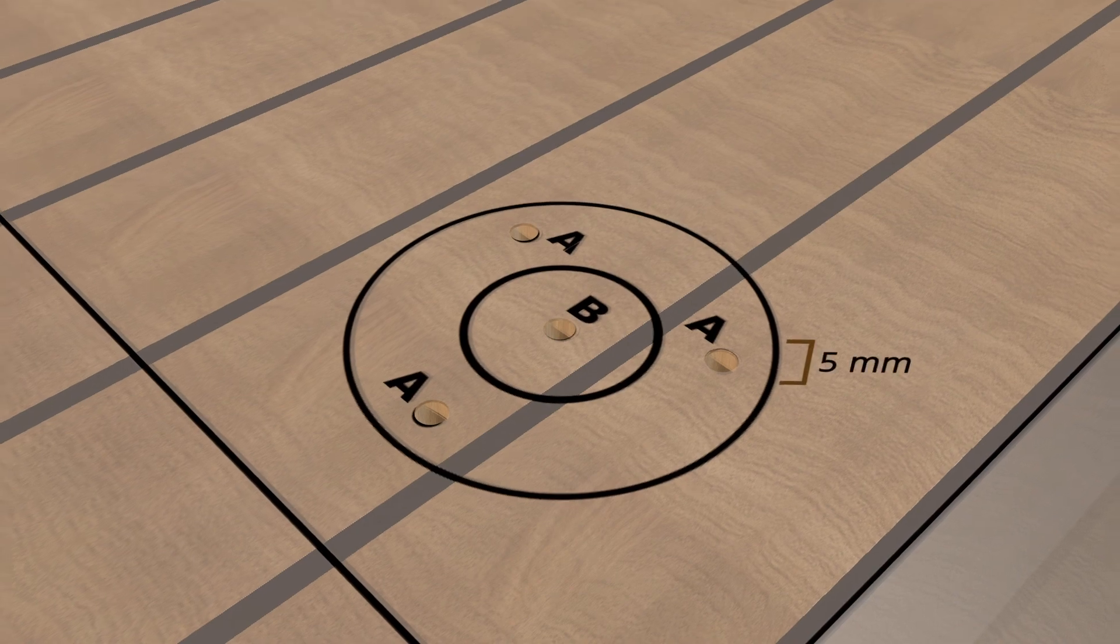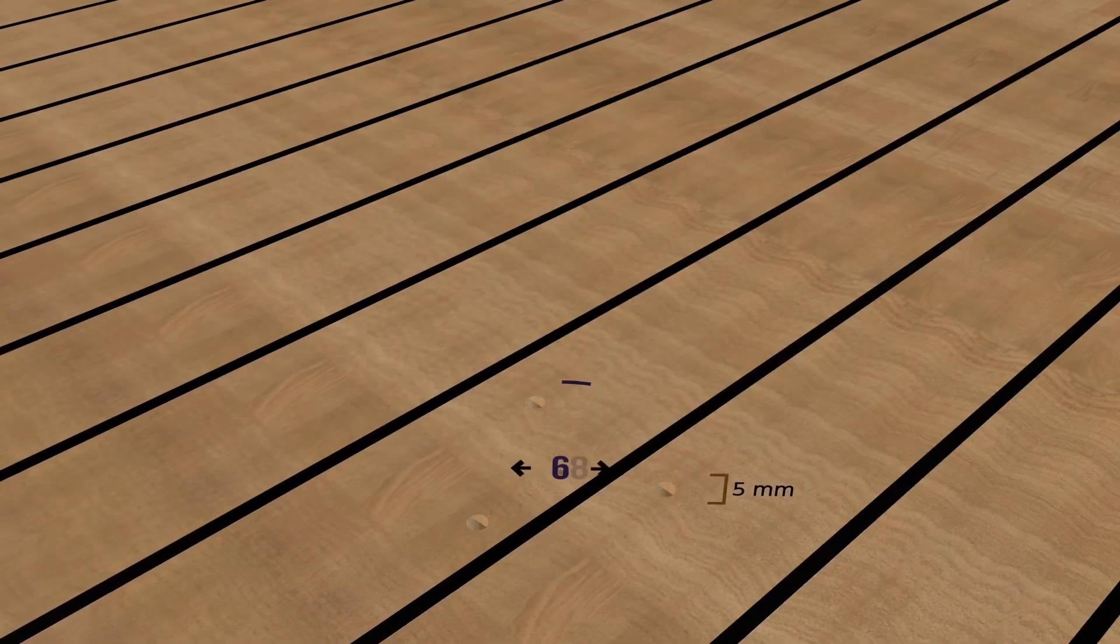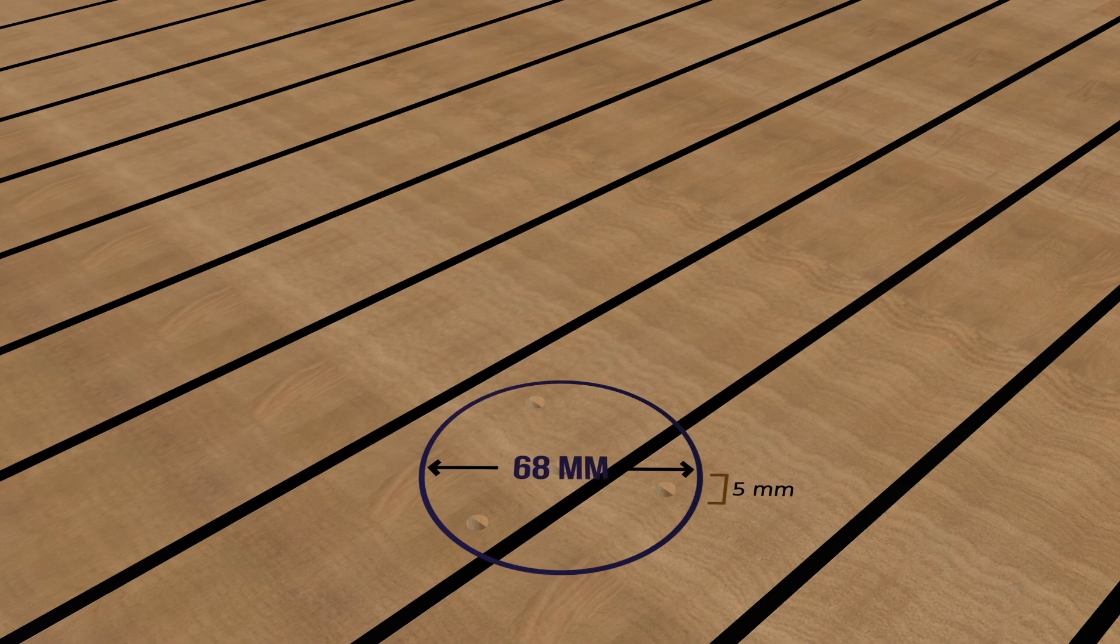The fixing requires a 5mm deep countersink to lie flush against the deck. Use a 68mm hole saw to cut a hole 5mm into the deck.